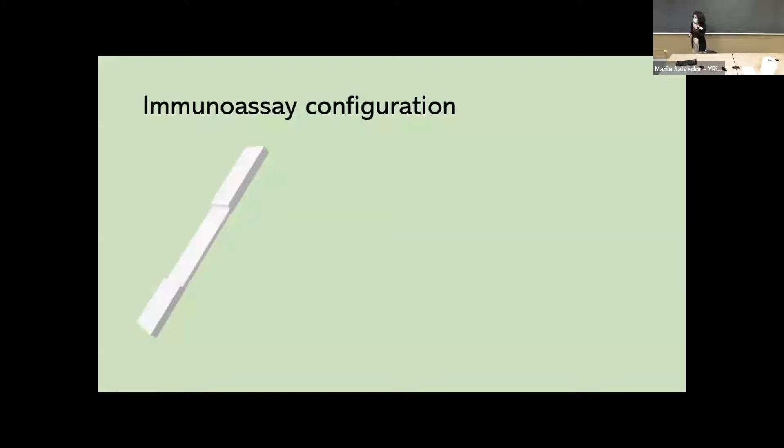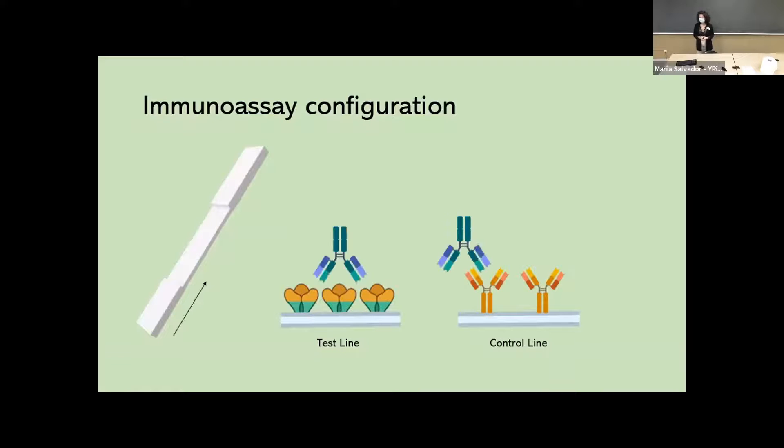So we are going to work with immunoassays, which are the same technology as the home pregnancy test. Let's make them just a piece of paper in which we are going to print two different lines. In the first line, in this case we are going to print the spike protein of the SARS-CoV-2, and we are going to print as well a control line.